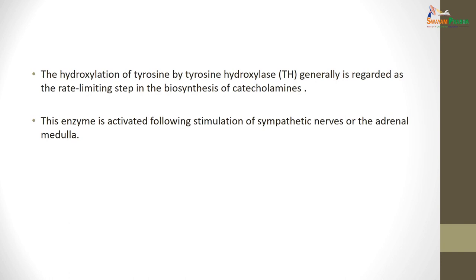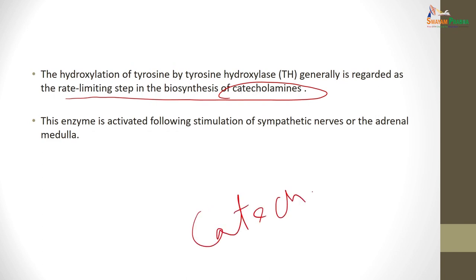The hydroxylation of tyrosine by tyrosine hydroxylase is called the rate-limiting step in biosynthesis. These compounds are called catecholamines because the catechol ring is present. This rate-limiting enzyme is activated following the stimulation of sympathetic nerves to the adrenal medulla, which is the biggest ganglion in the body. Following stimulation, there is excessive release of adrenaline and noradrenaline. You may have seen patients with pheochromocytoma, where there is an adrenal medulla tumor and because of the release there is a hypertensive crisis.